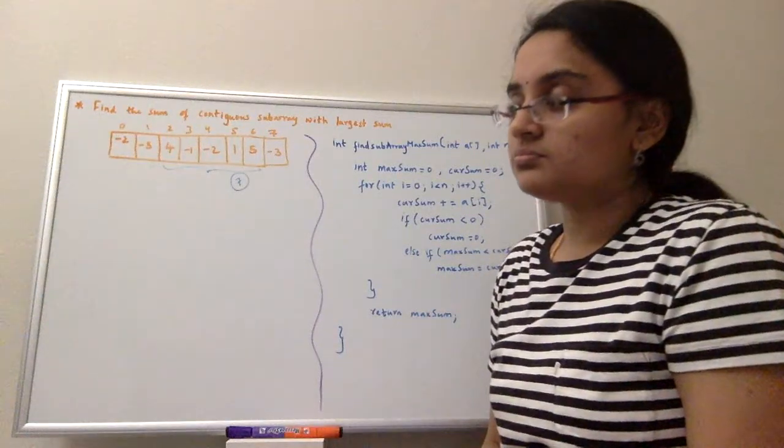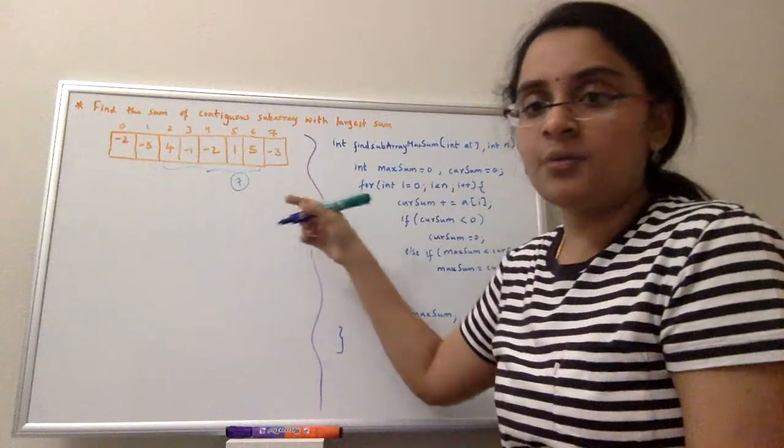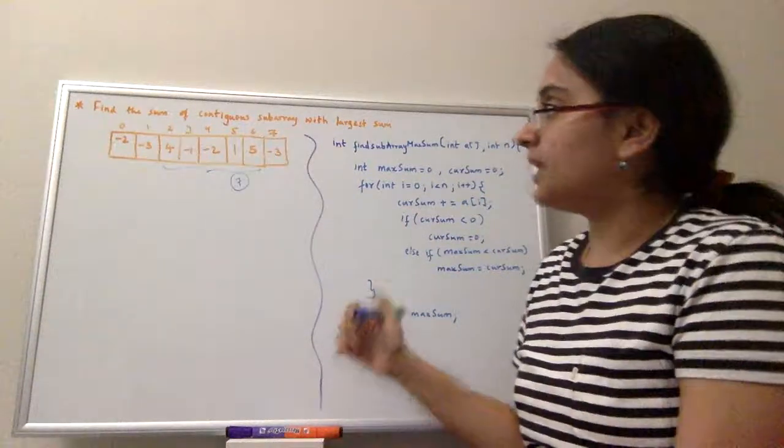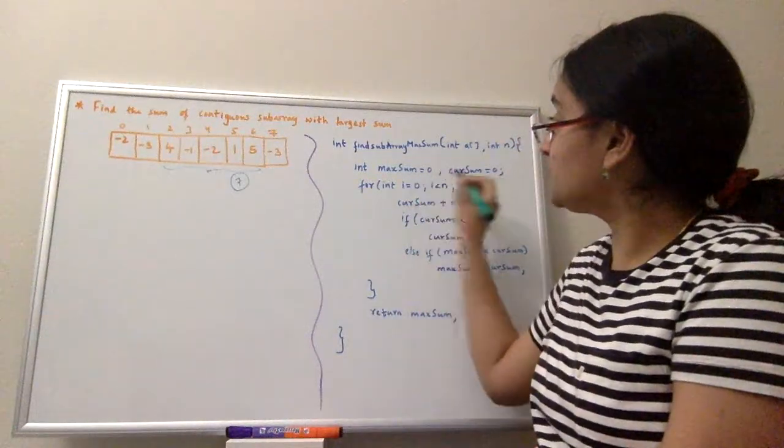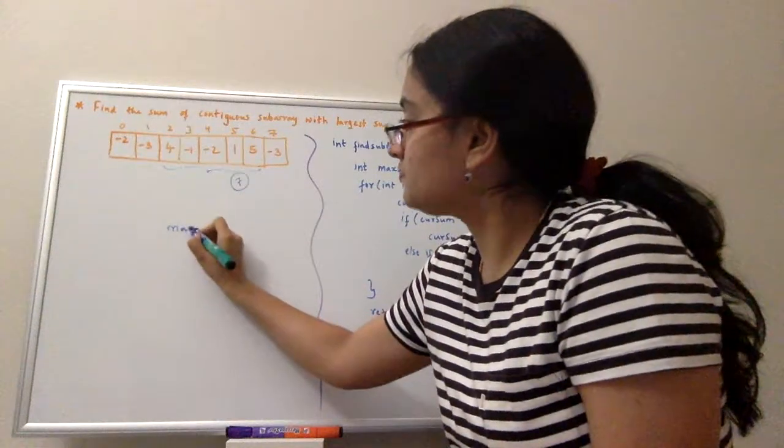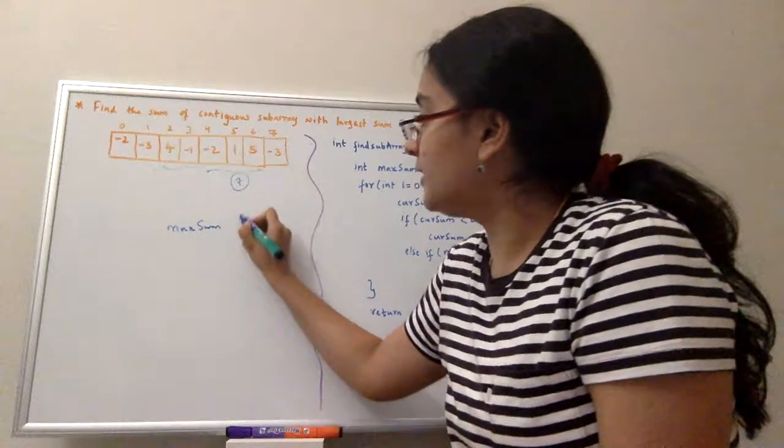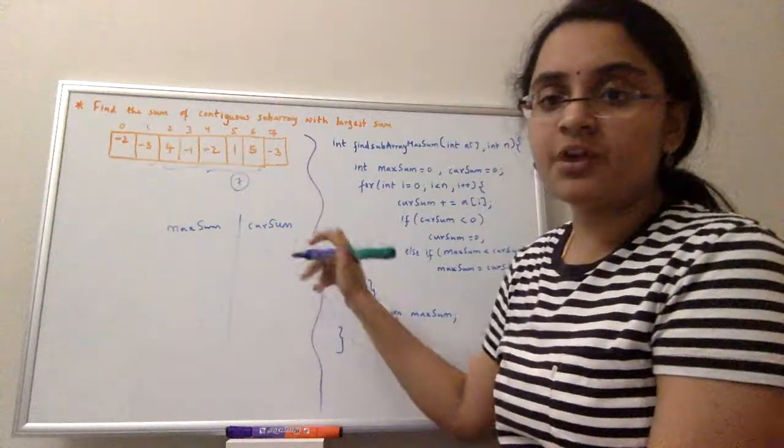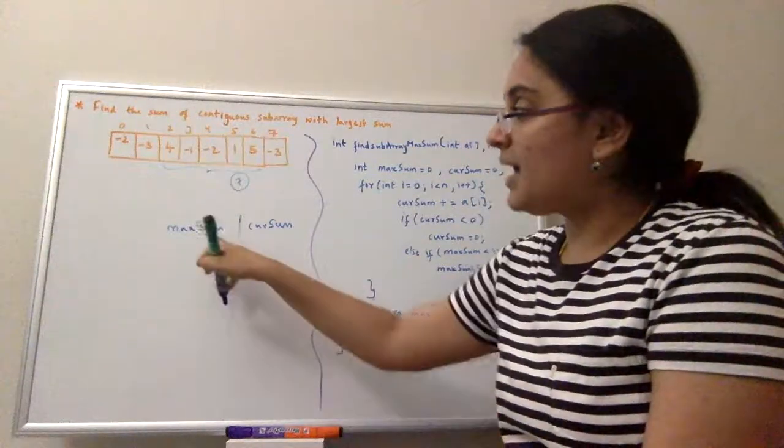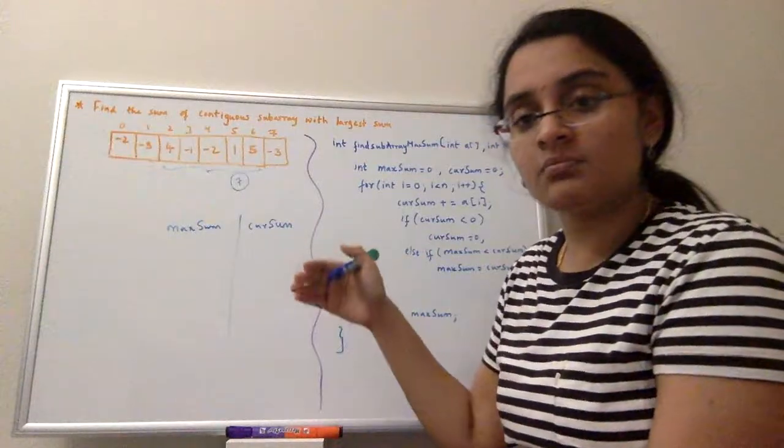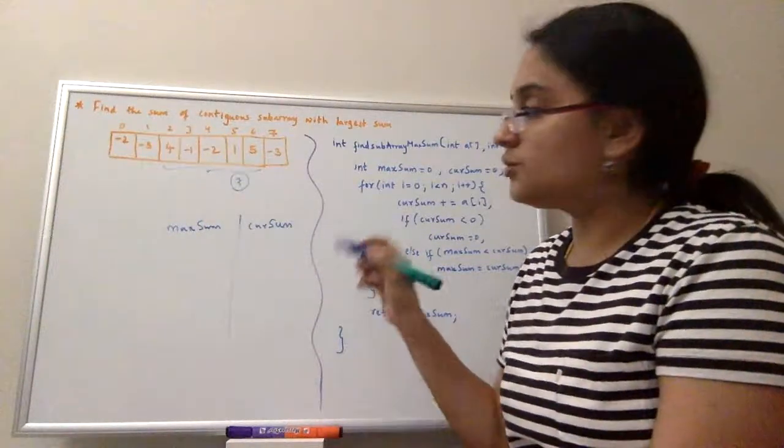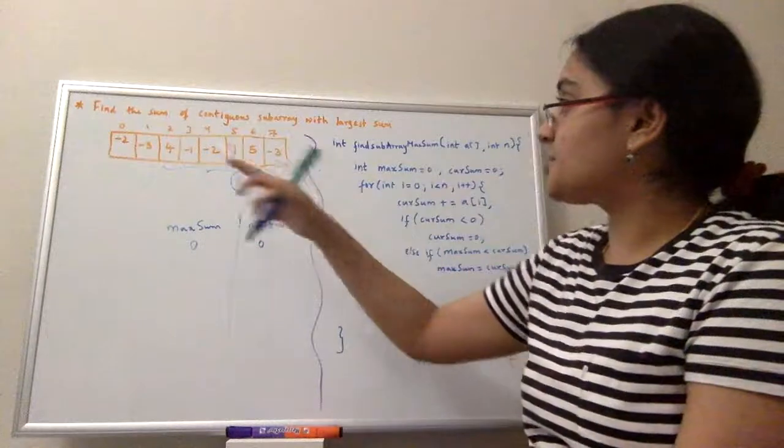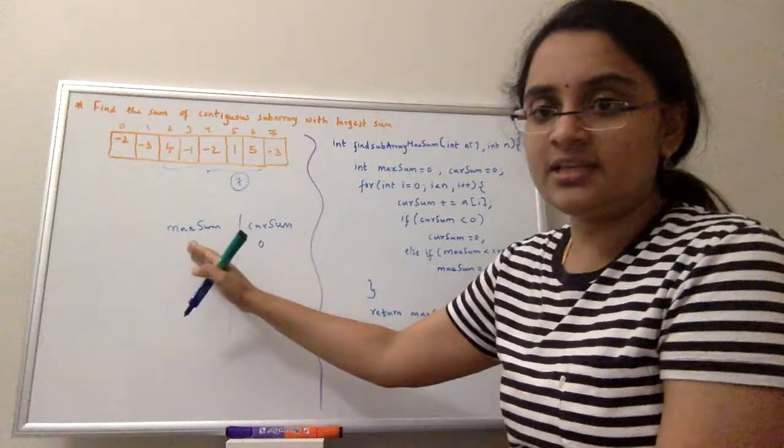So how do we implement this programmatically? For that, in my implementation I am taking two sums: one is max sum and the other one is current sum. Current sum will keep track of the sum of the subarray. Max sum will keep track of the maximum sum that has occurred till then. So for the first time both the sums will be 0, and then as I traverse through the array these values get changed.